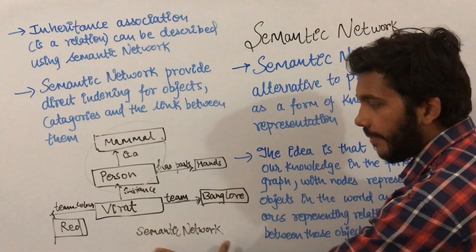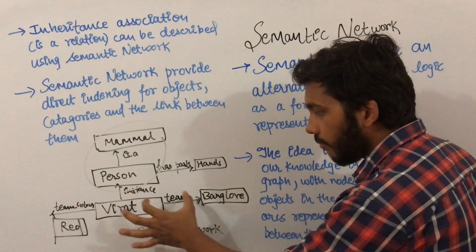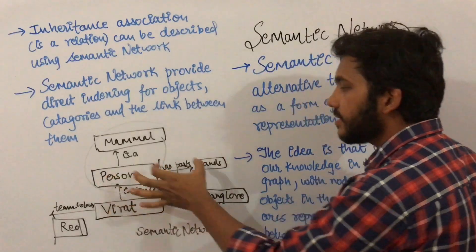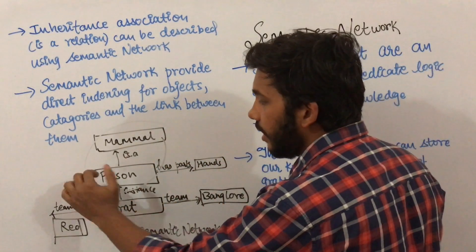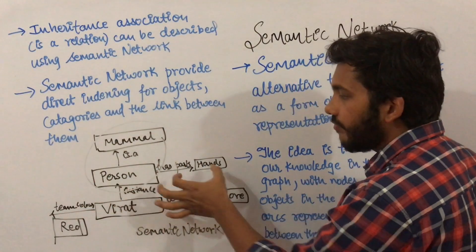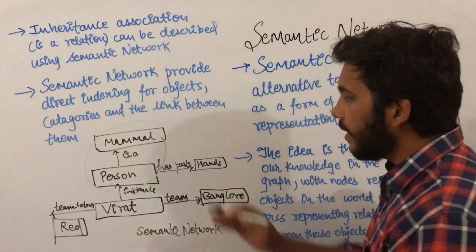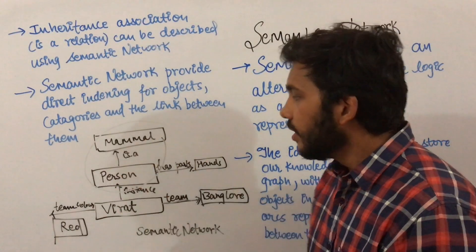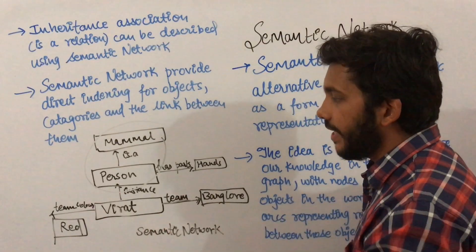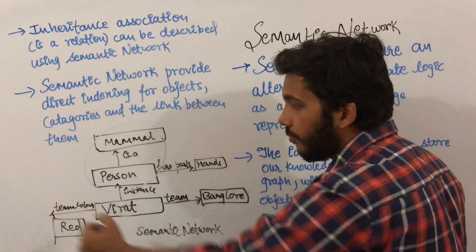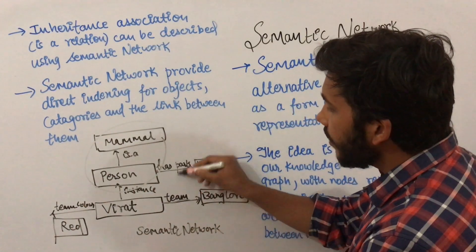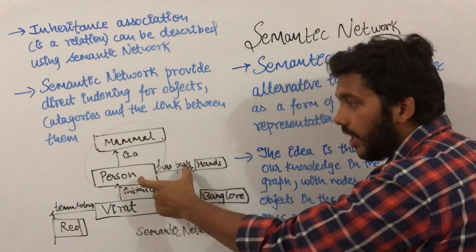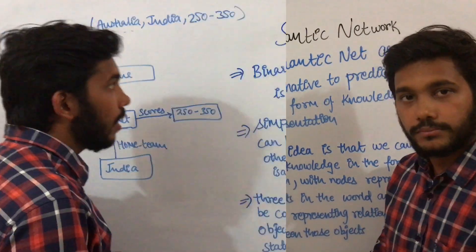This is an example of a semantic network: Virat is of the team Bangalore, Virat's team color is red, Virat's instance is a person, person has parts called hands. We can have different attributes of person — person can see, person can smell, person has height. For our object we can have different attributes, represented with different nodes, and the relationships between nodes are represented with arcs.